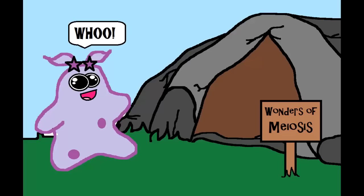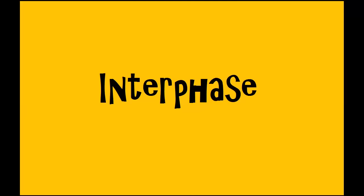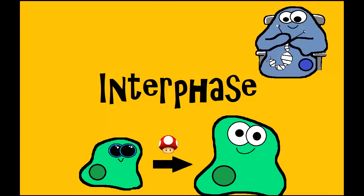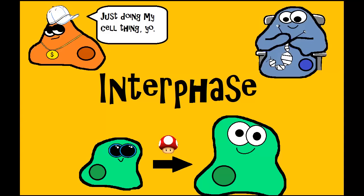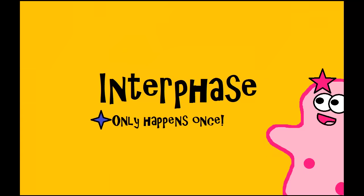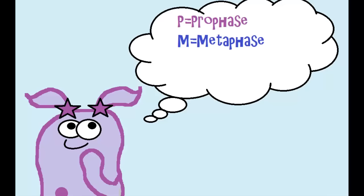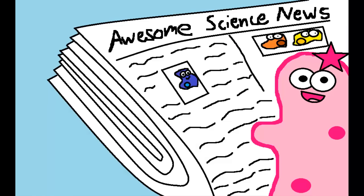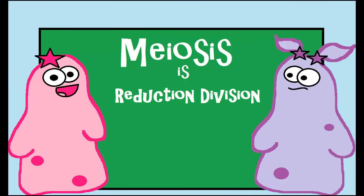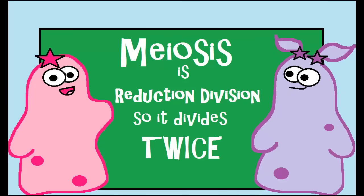Before we get into the stages of meiosis, we have to remember what comes before it — interphase, which also happened in mitosis. Interphase is when the cell is growing, replicating its DNA, and carrying out cell processes. Just like mitosis, interphase happens one time before meiosis starts. You might remember from mitosis the phrase PMAT: P for prophase, M for metaphase, A for anaphase, and T for telophase. In meiosis you still use those terms, but because meiosis is a reduction division, you divide twice — you do PMAT twice.